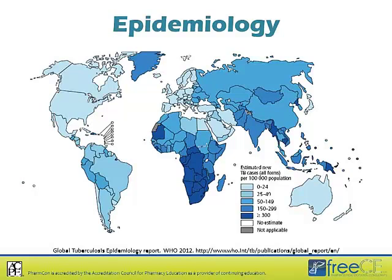Multi-drug resistant tuberculosis is present in about 4% of new cases and 20% of previously treated cases — not a huge problem, but certainly much more difficult to treat. In the United States, the most staggering statistic is that there are 13 million people in the US that are latently infected with mycobacterium tuberculosis. A good number of people have been exposed to tuberculosis, don't have active disease, but could develop disease if the conditions are right.